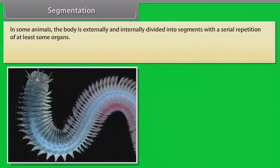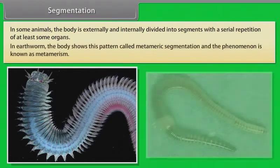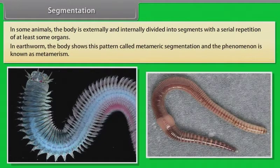In some animals, the body is externally and internally divided into segments with a serial repetition of at least some organs. In earthworm, the body shows this pattern called metameric segmentation, and the phenomenon is known as metamerism.